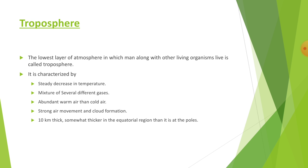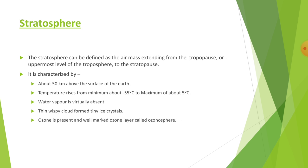The stratosphere can be defined as the air mass extending from the tropopause — the uppermost level of the troposphere — to the stratopause. It is characterized by conditions about 50 kilometers above the surface of the Earth, where the temperature rises from a minimum of about minus 55 degrees Celsius to a maximum of about 5 degrees Celsius.